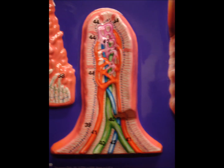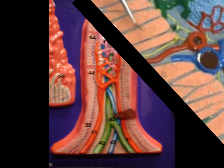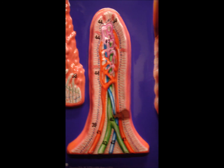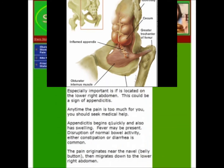Finger-like structures called intestinal villi are responsible for the absorption of nutrients in our gut. Celiac disease attacks these intestinal villi. Appendicitis will cause pain in the lower right abdomen, and this needs medical attention immediately.